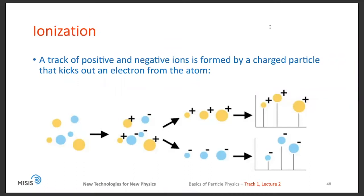Now, let's talk about these processes in a bit more detail. In this slide, a cartoon demonstration of the ionization is shown. When a charged particle passes through the medium, it can kick out an electron from the atom, and then a track of positive and negative charges is formed on its trajectory, which can then be collected with dedicated electronics.